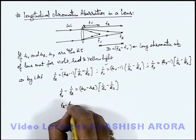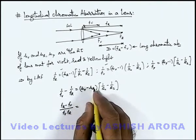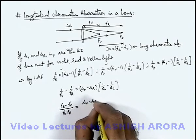f_r minus f_v divided by f_v f_r is equal to this, we can write as mu_v minus mu_r.